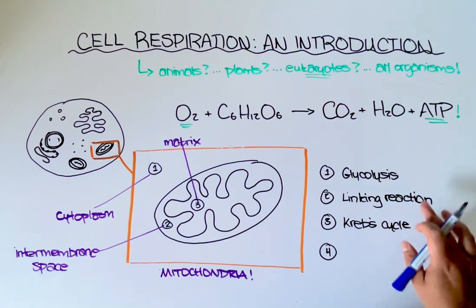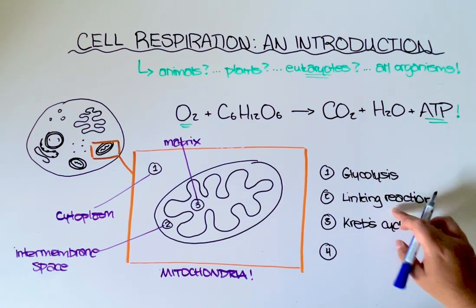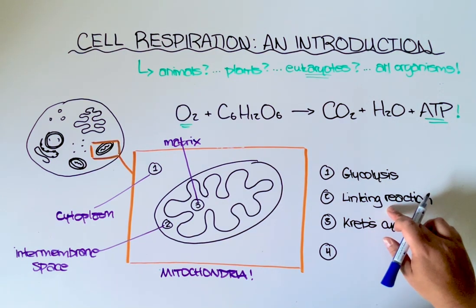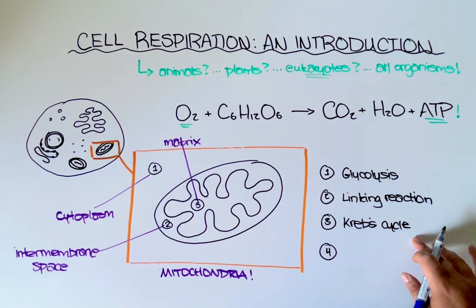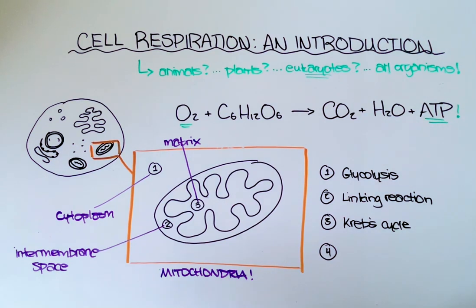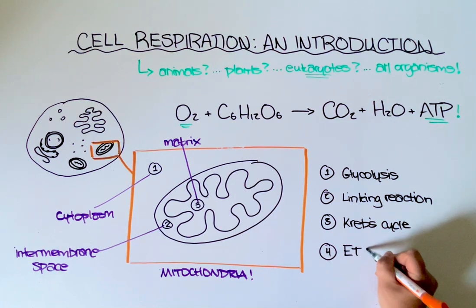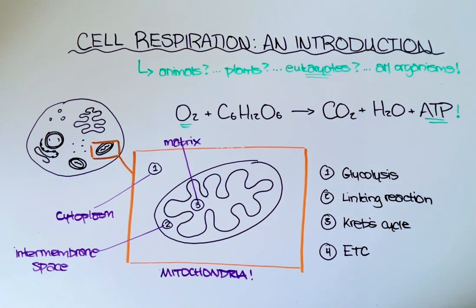And the Krebs cycle takes the acetyl coenzyme A created here in the linking reaction and puts it through a bunch of complex reactions to make a couple of molecules, which will then go on to, you guessed it, fuel our last step, which is the electron transport chain, or ETC for short.